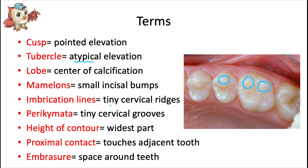Imbrication lines are tiny ridges or wrinkles that run horizontally (mesiodistally) on the cervical third — toward the gums — of the labial surface of anterior teeth. They appear due to incremental enamel deposition as the crown is forming. Perichimata are tiny grooves between those imbrication lines, and I'll show you examples when we talk about the maxillary central incisor.